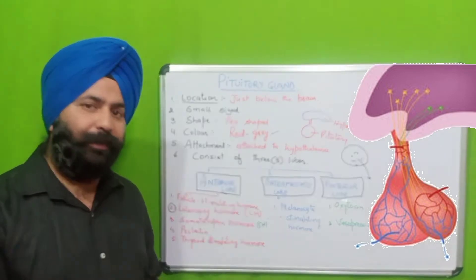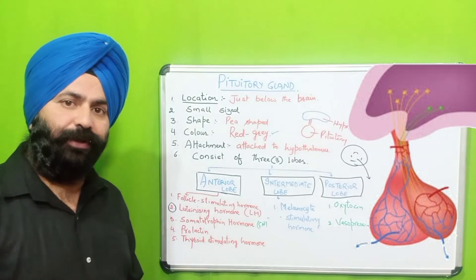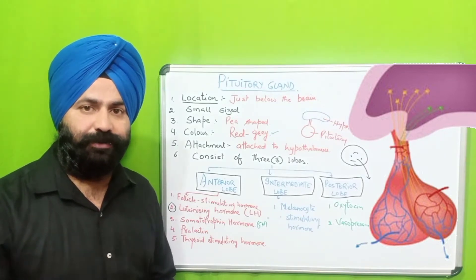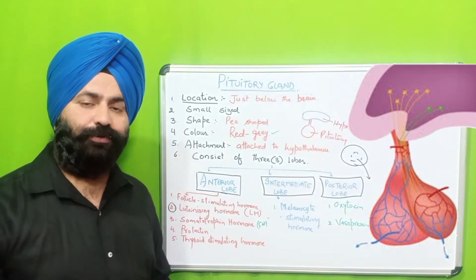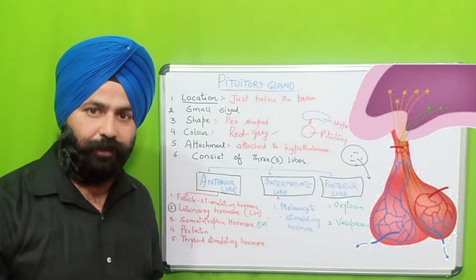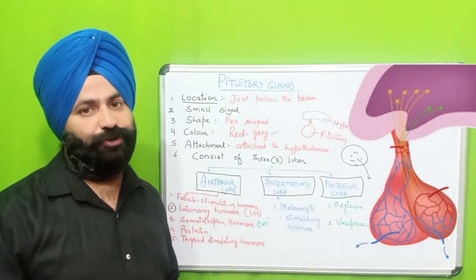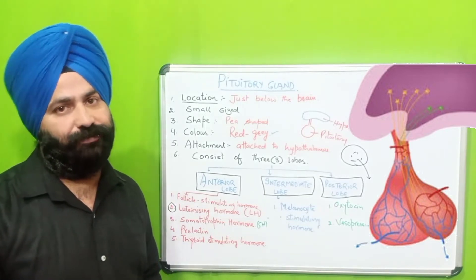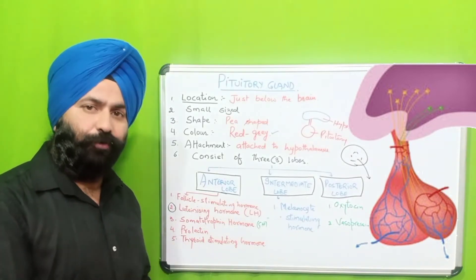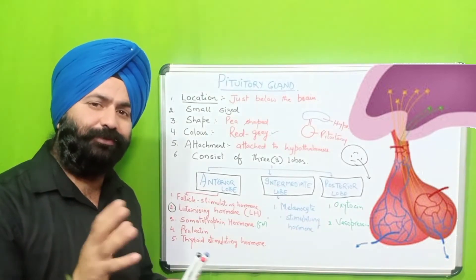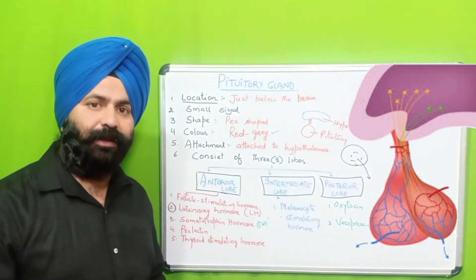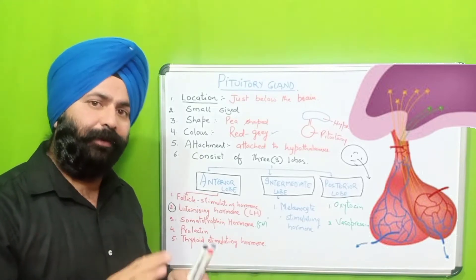In females, the gonads are the ovaries. The eggs present in the ovaries are released during the menstrual cycle — this release process is called ovulation. Luteinizing hormone helps in ovulation as well as in the formation of female hormones: progesterone and estrogen.